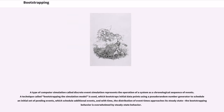A type of computer simulation called discrete event simulation represents the operation of a system as a chronological sequence of events. A technique called bootstrapping the simulation model is used, which bootstraps initial data points using a pseudorandom number generator to schedule an initial set of pending events, which schedule additional events, and with time the distribution of event times approaches a steady state, where the bootstrapping behavior is overwhelmed by steady-state behavior.